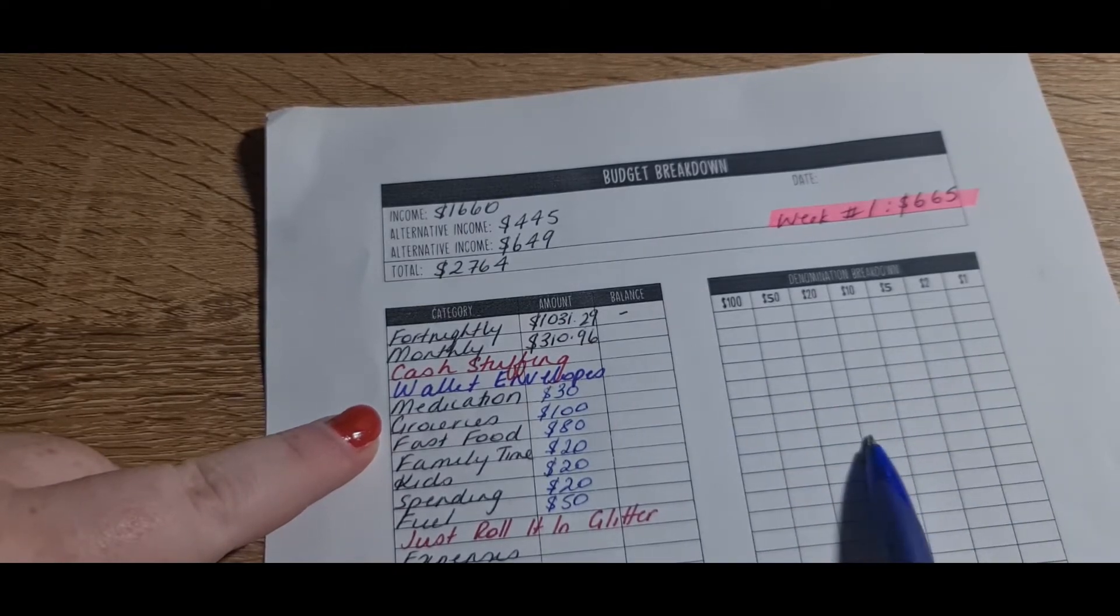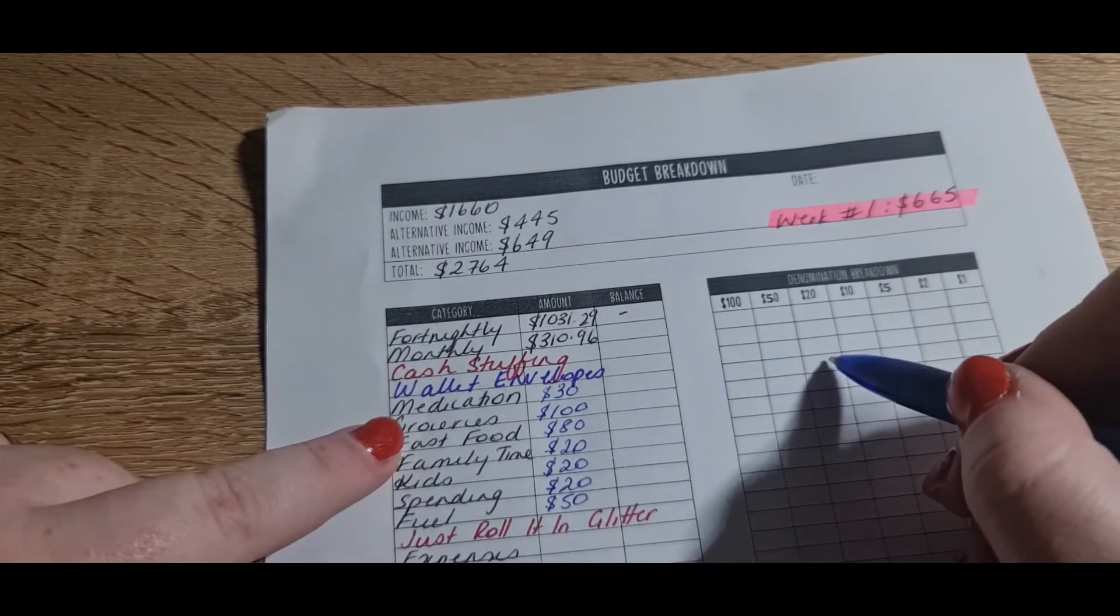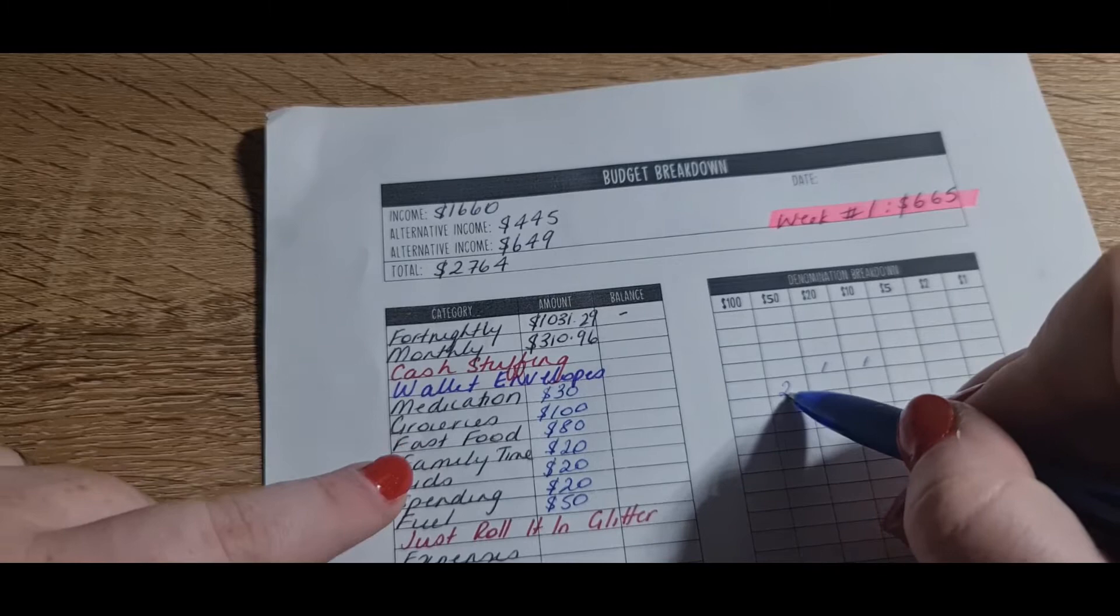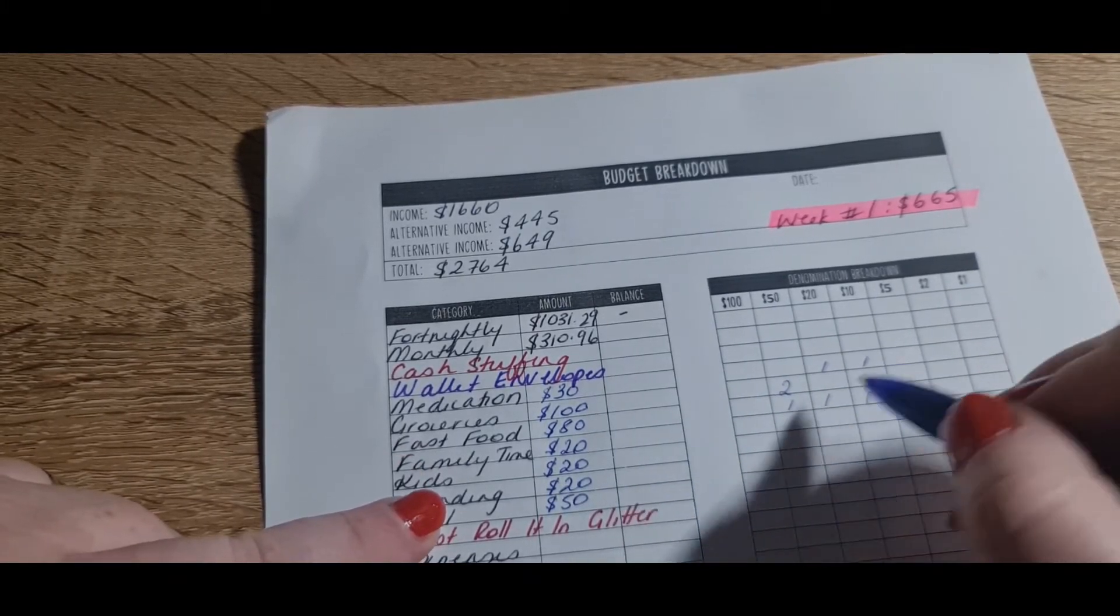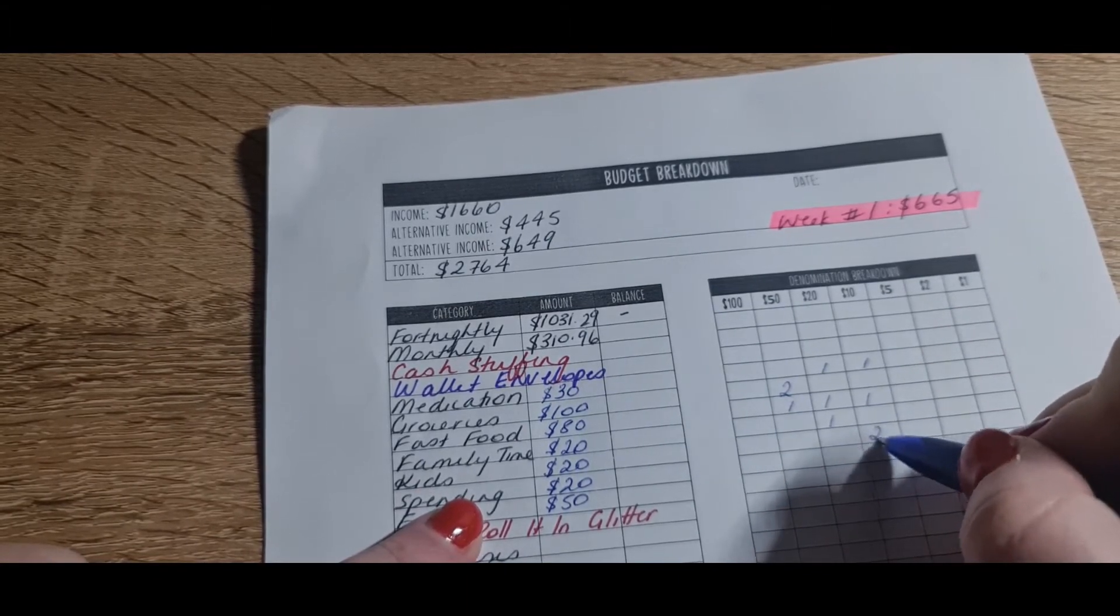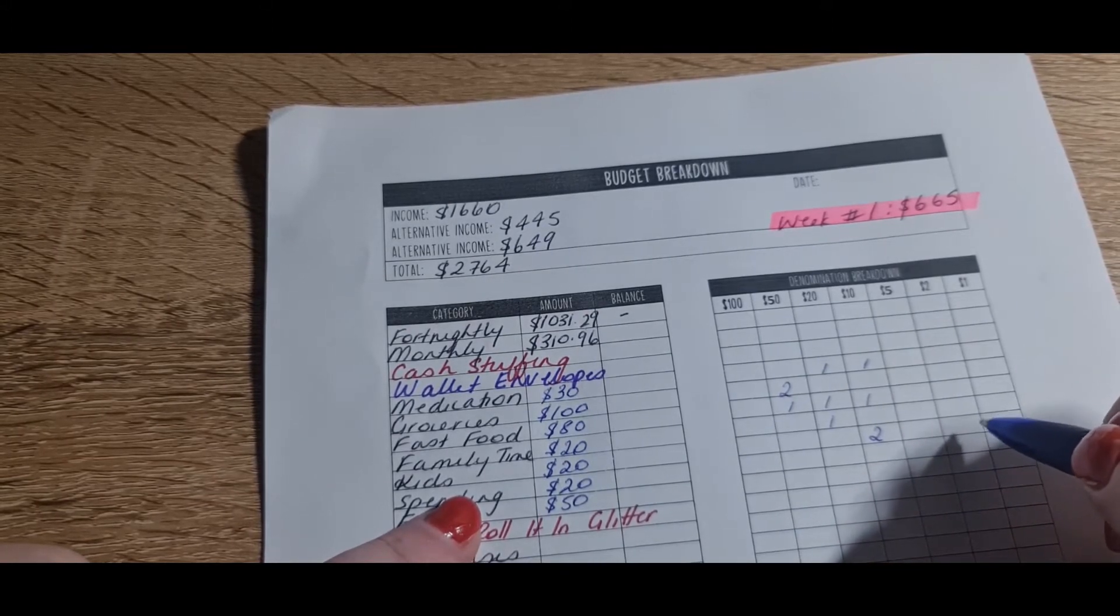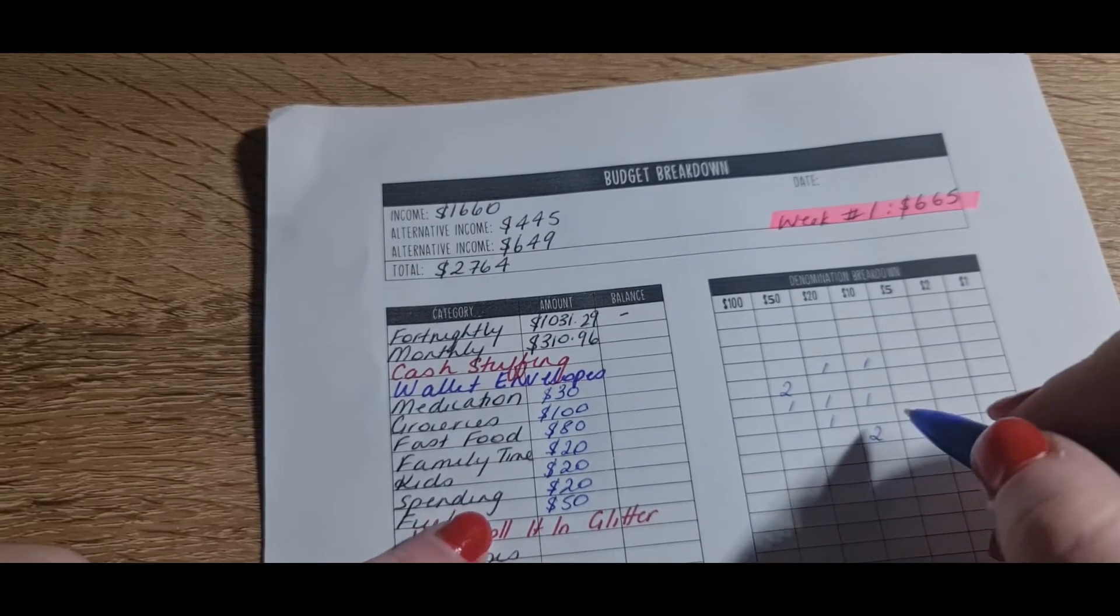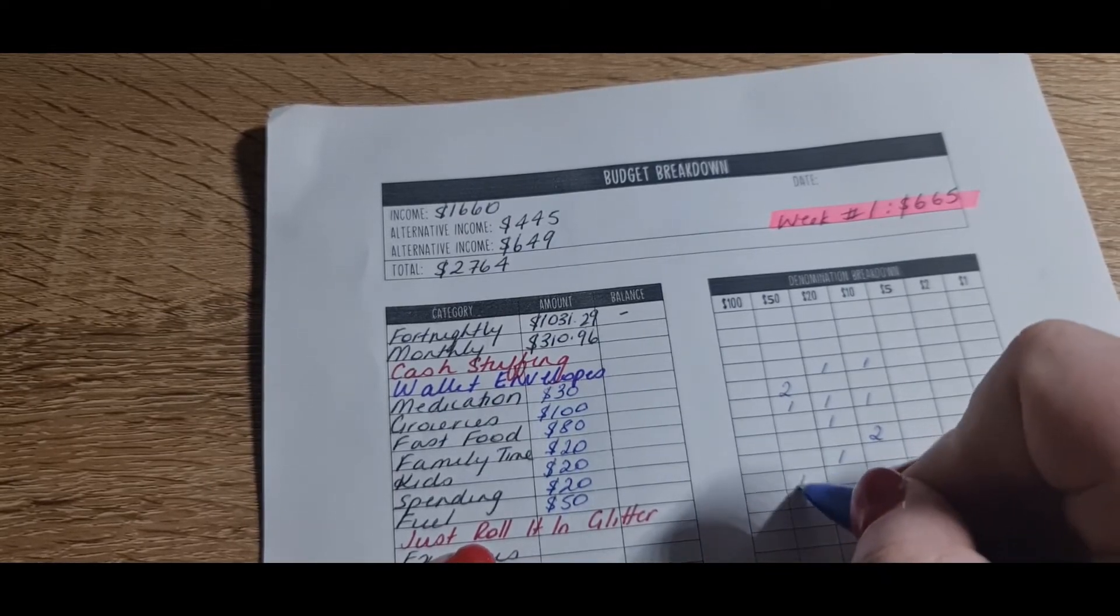Now once I have the amounts, I then go into the other side of the page, and this is the denominations I'm gonna need for when I go to the bank. So for the medication, it's a $20 and a $10. Groceries is two $50s. Fast food is a $50, $20, and a $10. Family time is a $20. The kids always get two $10 notes each. If they don't spend it over the fortnight, it goes into their individual savings envelopes.